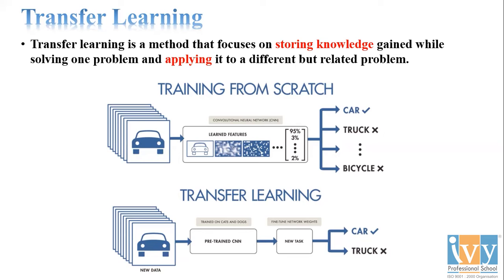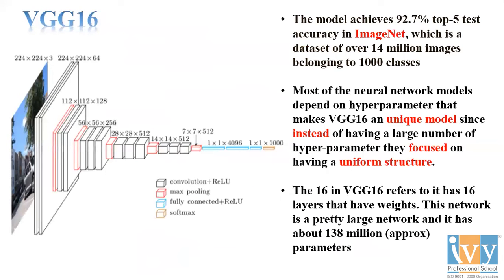So transfer learning stores knowledge in the form of the 'drawing' and then applies it to related problems. For example, if we need a zebra image, the outline is already drawn — we just extract it and color it. Instead of doing everything from scratch, we use what's already done. One such transfer learning model I employed is VGG16.